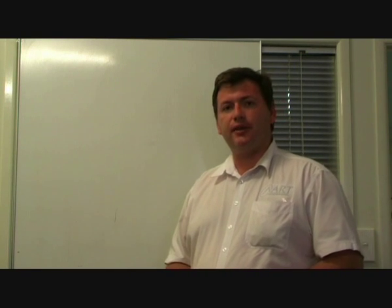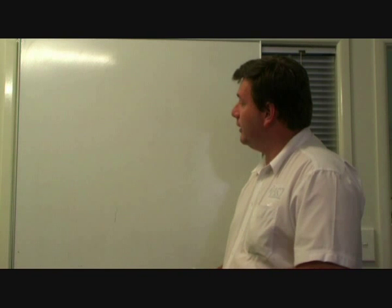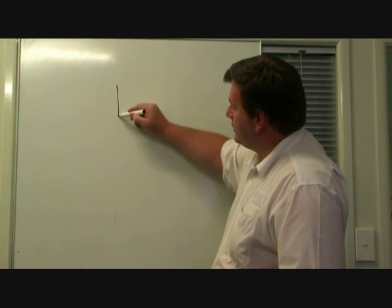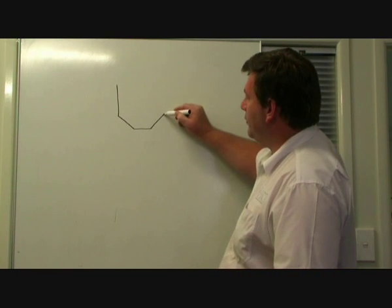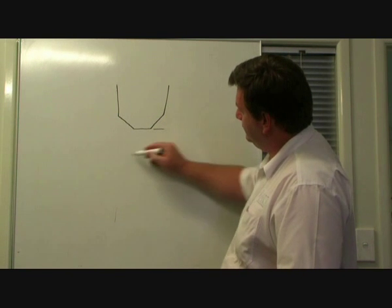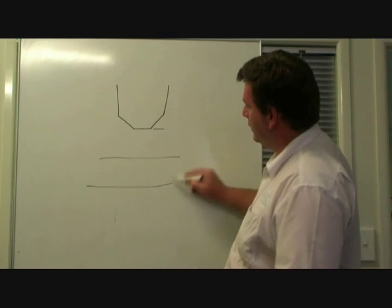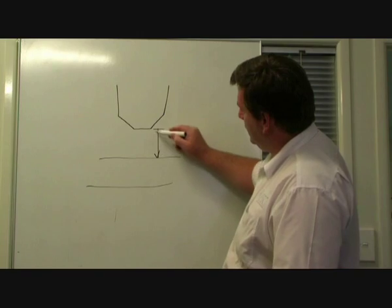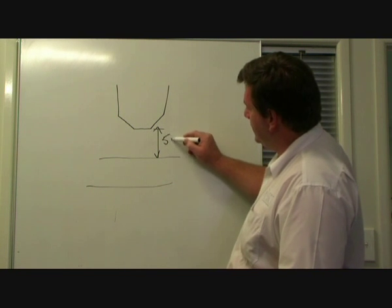After the pierce height, there's another setting that takes over. If you can imagine the torch piercing at approximately 5mm, I'll just draw that a little bit larger there. That distance is 5mm.